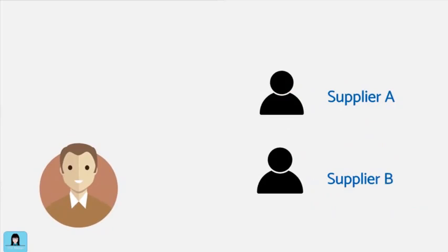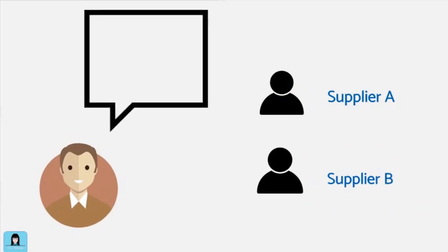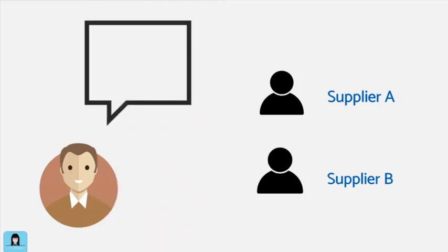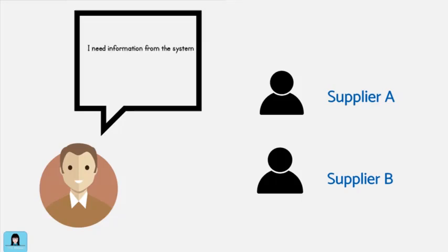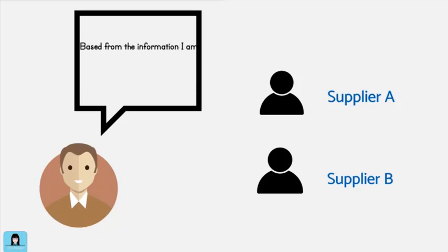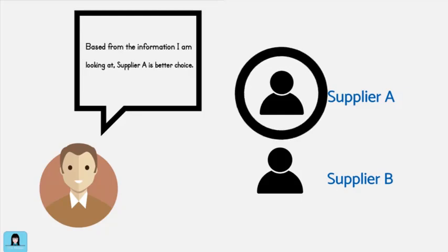Another example is a purchasing manager making a decision on from which supplier to buy the raw materials. The manager needs various information such as current prices offered by and the consistent performance of providing quality items of each of the vendors. This information may be obtained from the accounting information system; the manager compares the information of each vendor and decides to whom the purchase will be made.